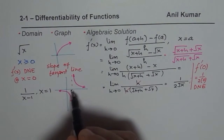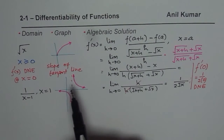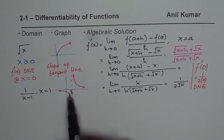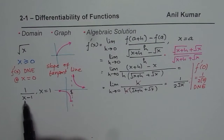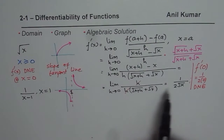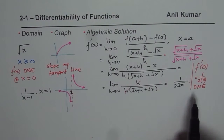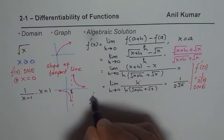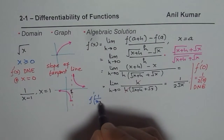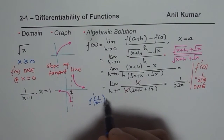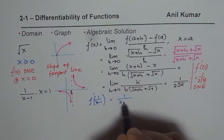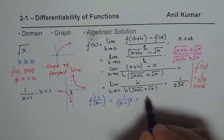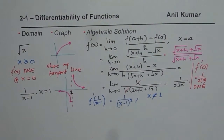Since 1 is not in the domain, you cannot draw a tangent there, and therefore this function is not differentiable at x equals 1. Algebraically, the derivative formula you get is 1 over (x minus 1) squared. So you will find that this function is not differentiable at x equals 1.